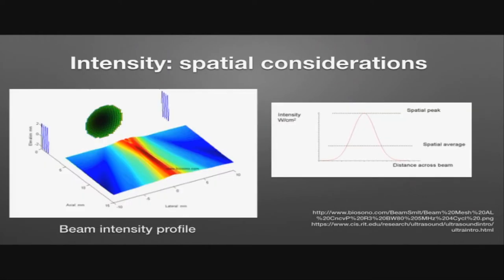Considering the spatial aspects of intensity: a beam intensity profile in three dimensions shows the highest intensity in the central portion of the wave. In a cross-section with distance across the beam on the x-axis and intensity in watts per centimeter squared on the y-axis, the centre of the beam has the highest intensity, falling off at the peripheries. There are two values: SP — spatial peak — and SA — spatial average. Spatial average is the average intensity across the entire cross-section at a specific depth. Spatial peak is the point of greatest intensity, typically at the central axis or at the focus point.